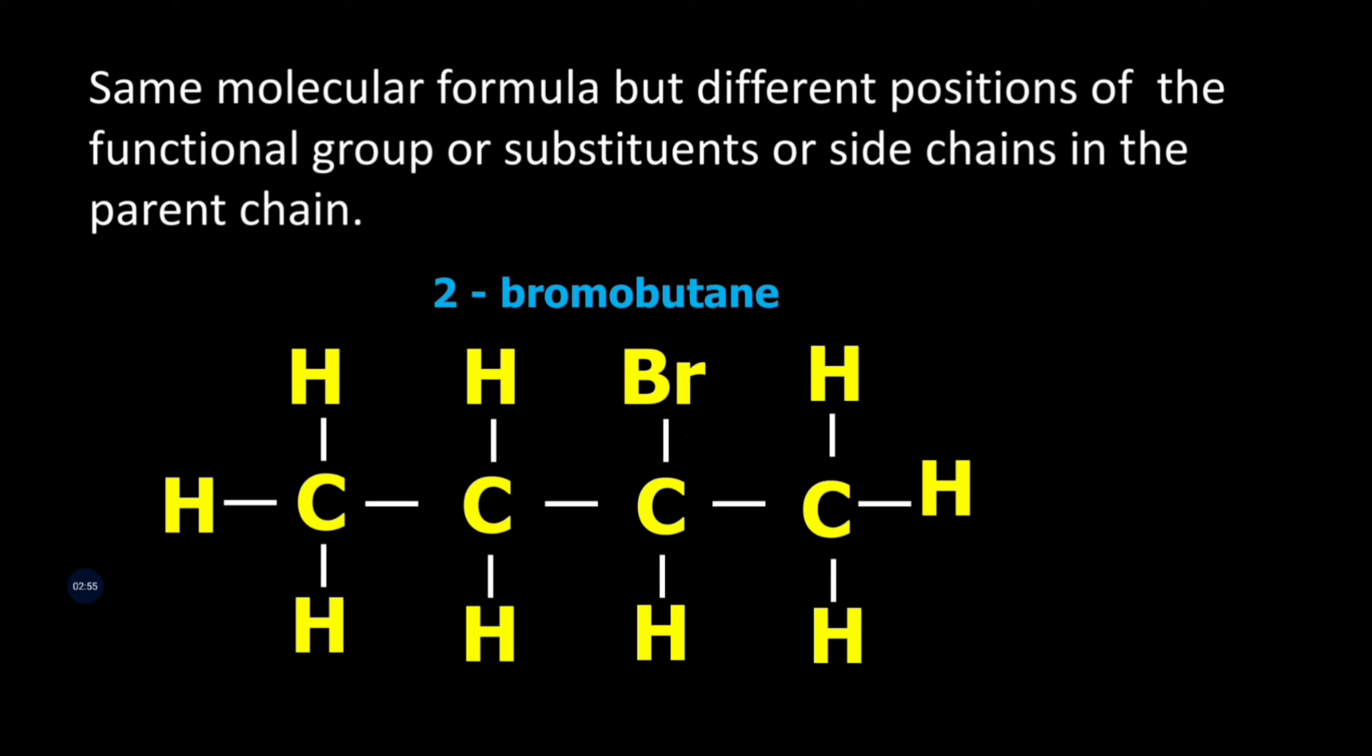So 1-bromobutane and 2-bromobutane are positional isomers of each other.